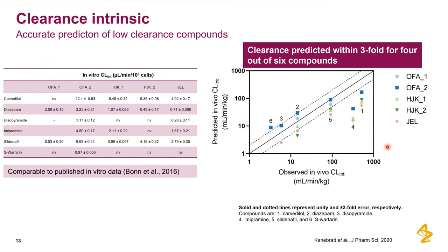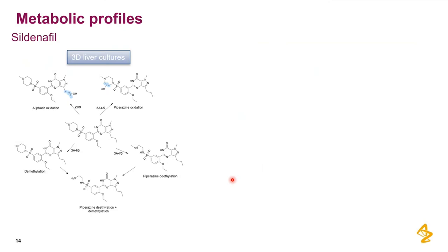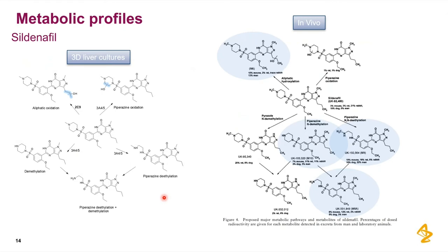From the same incubations, we also take the medium and the spheroids and look at the metabolic profiles. In this example, we have sildenafil — the parent compound is in the middle, and then we look at which metabolites are formed — five entities are seen here. We compare it to how it looks in vivo, and in the scheme to the right, the metabolites marked in blue are the major human metabolites, and they match the ones we get from the 3D liver cultures. The ones that are not marked are metabolites from animal species. So we cover the human metabolites in our system, which is a positive outcome.